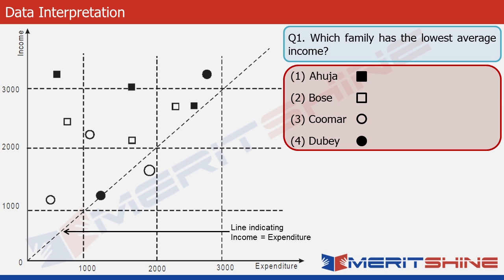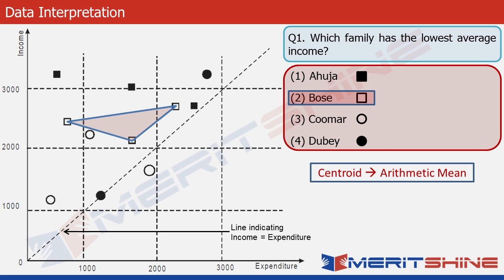Question one asks us to find the family with the lowest average income. Let's look at the Bose family first. We can form an imaginary triangle by joining the three points corresponding to the three members. The centroid of this triangle gives us the arithmetic mean of the coordinates — so the y-coordinate of the centroid represents the average income, which is approximately 2400 for the Bose family.